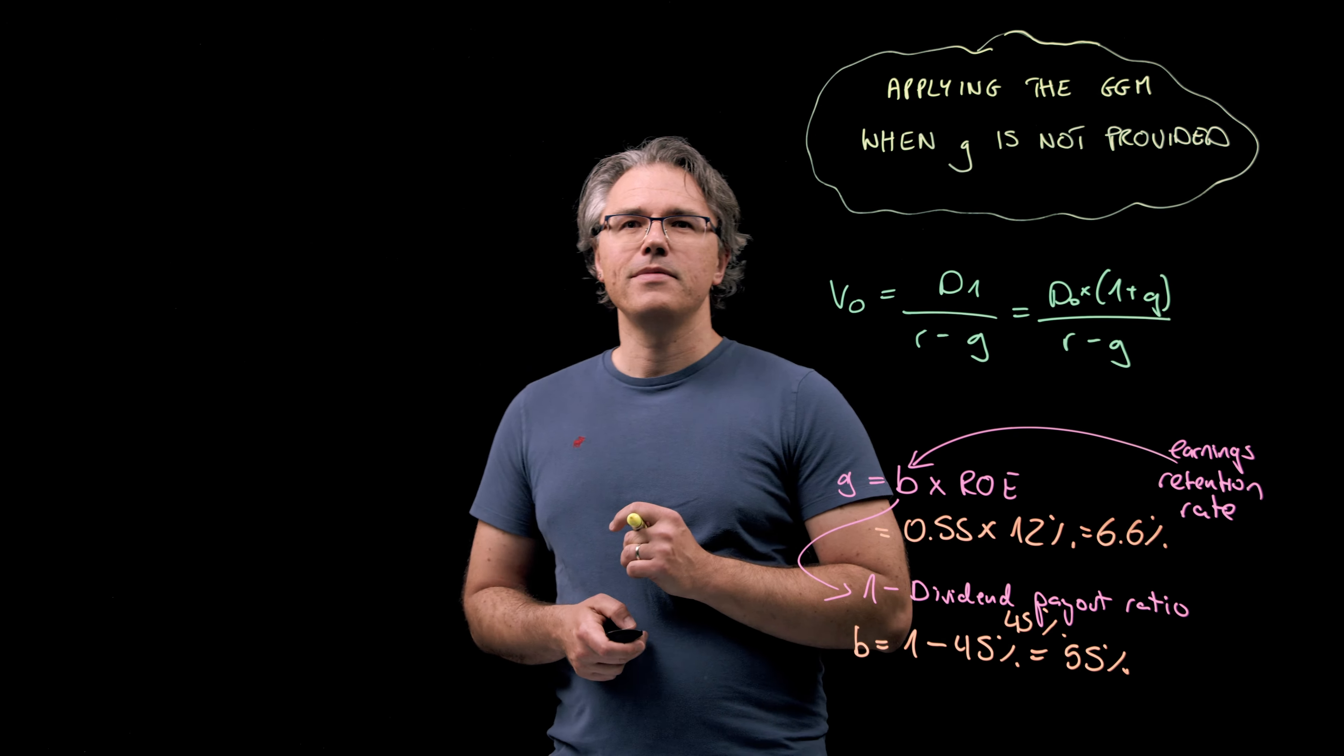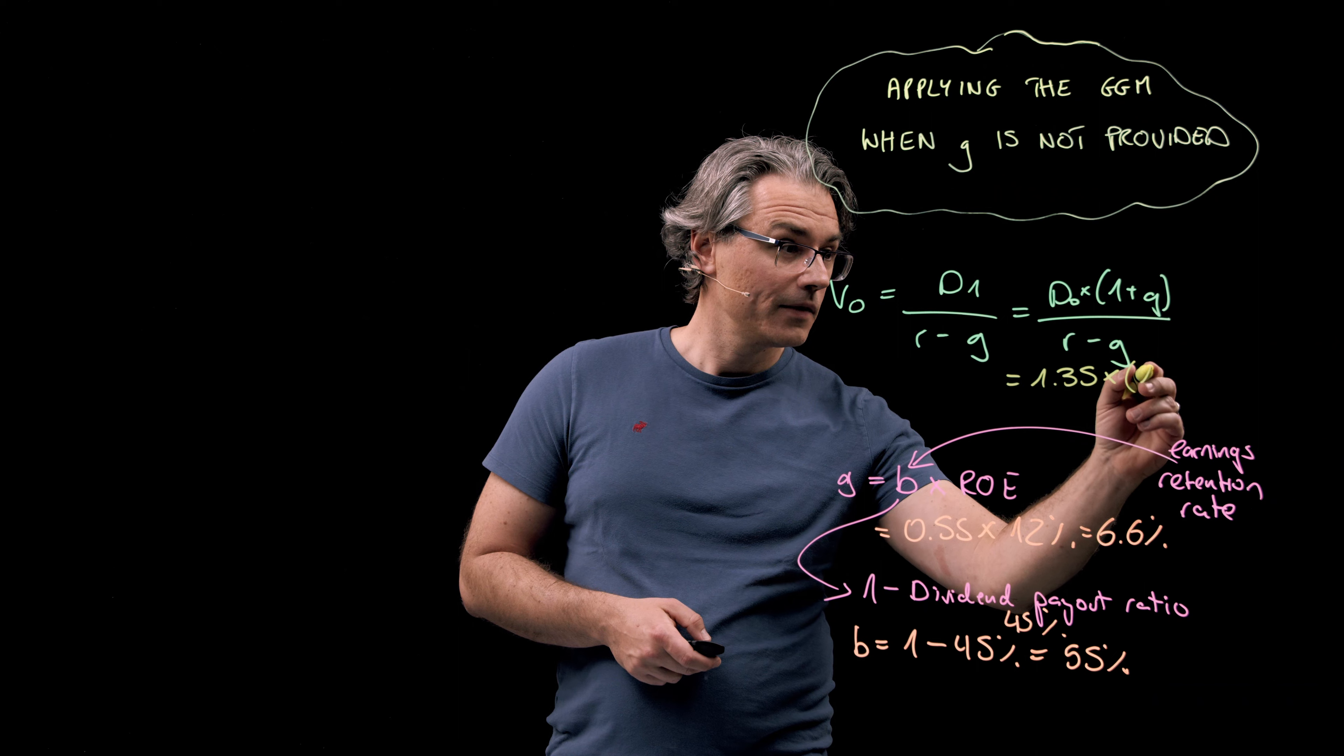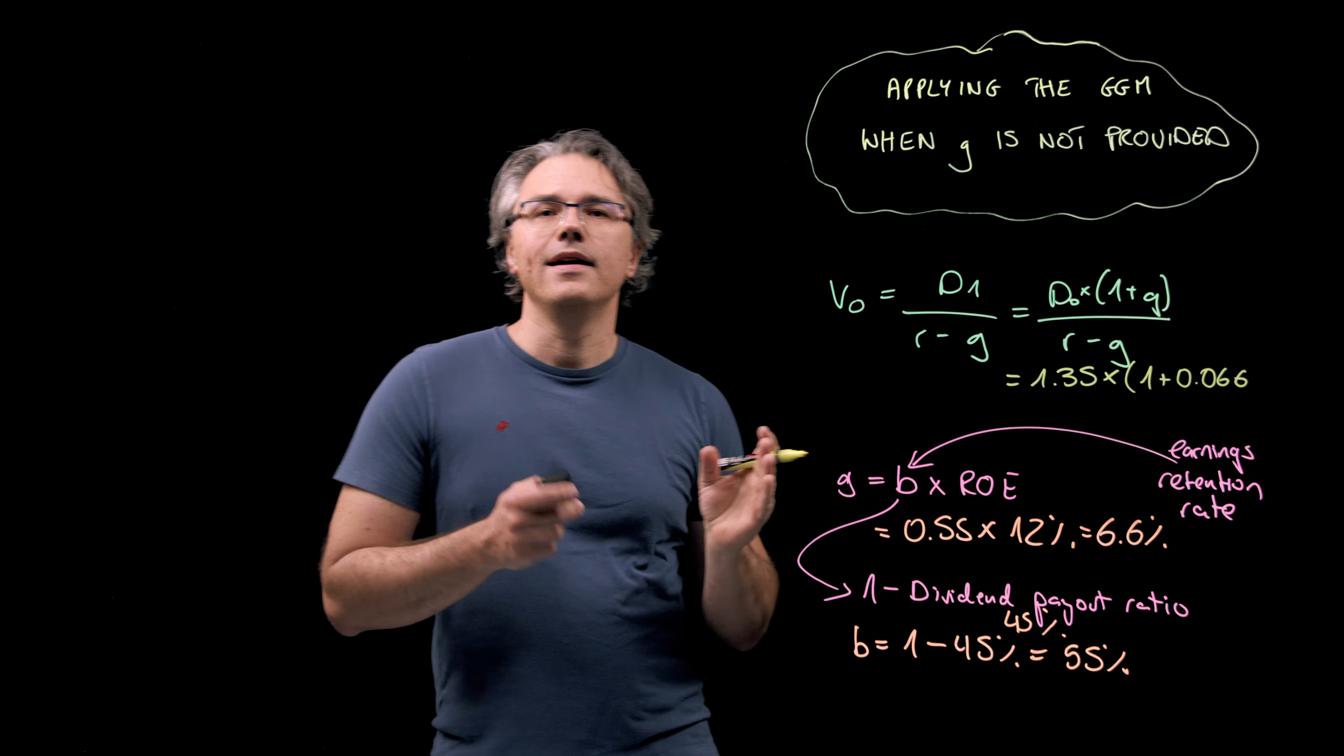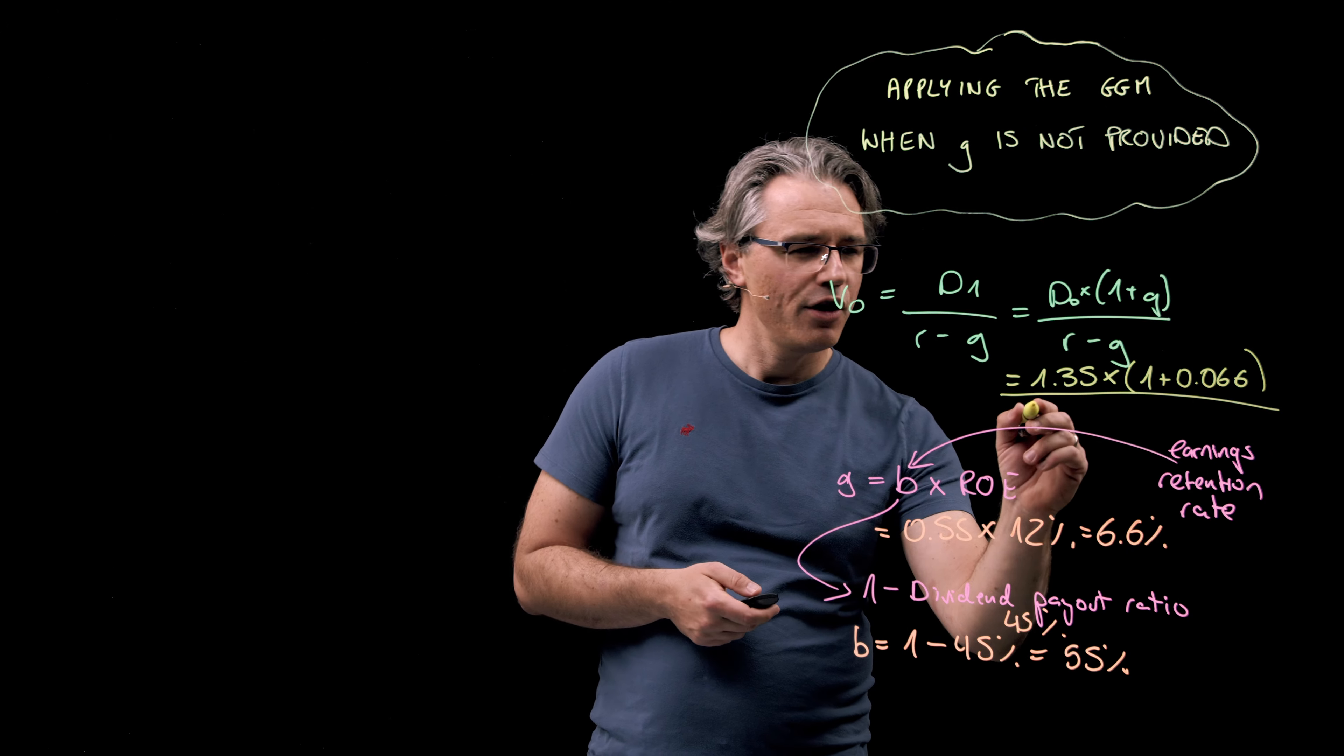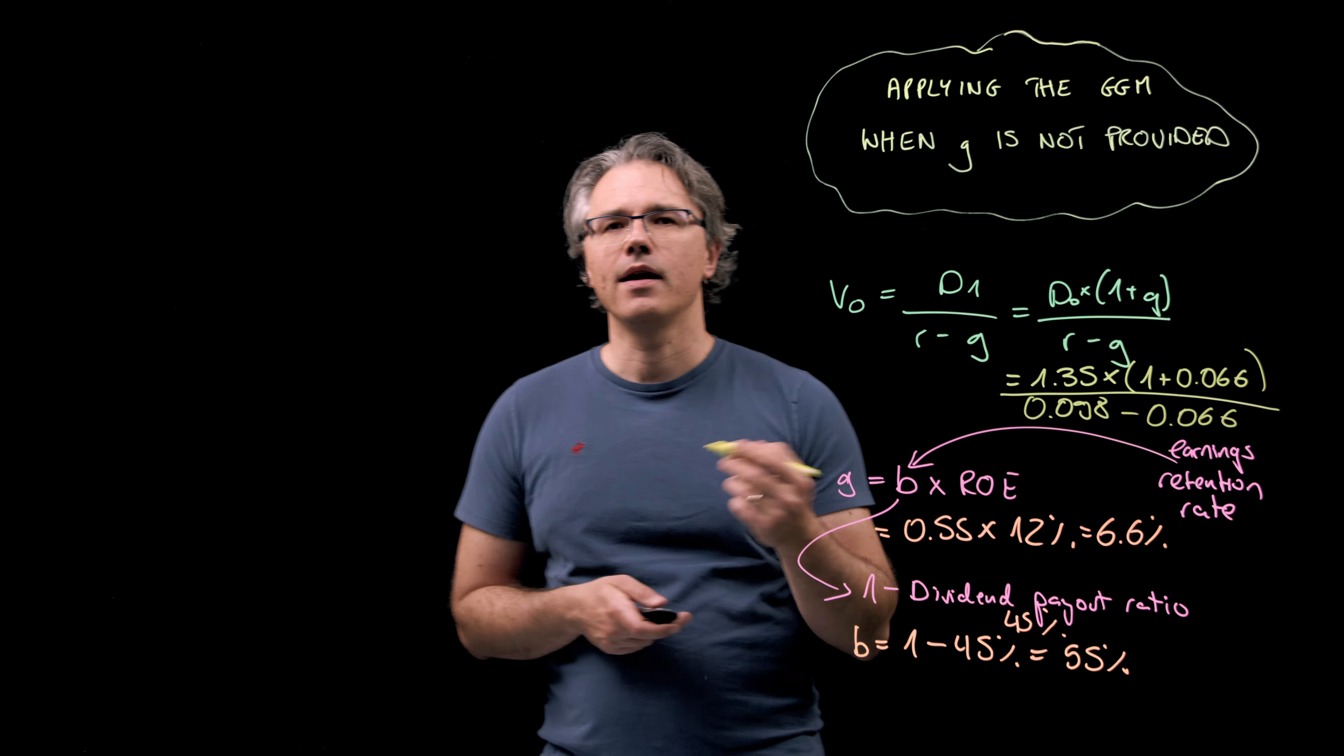Let's plug these numbers into the formula up here. 1.35 times (1 + 0.066) for G, divided by (0.098 - 0.066) again for G.